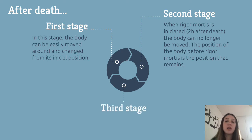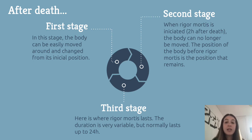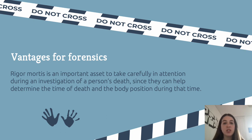The third stage involves the duration of rigor mortis, which is very variable because rigor mortis is affected by many factors, but it can normally last up to 24 hours. Rigor mortis brings many advantages for forensic investigation into someone's death, since it can help determine the time of death and the body position, making forensics aware of whether the body was moved by another person or not.